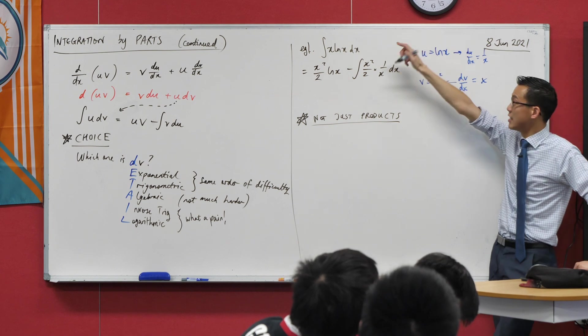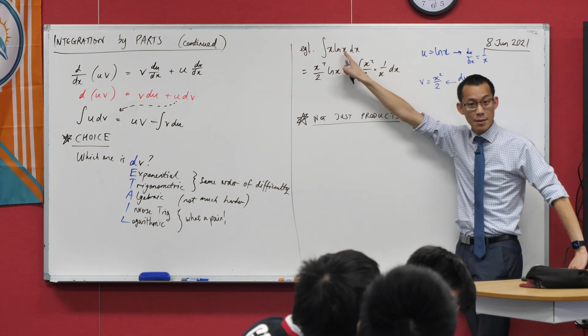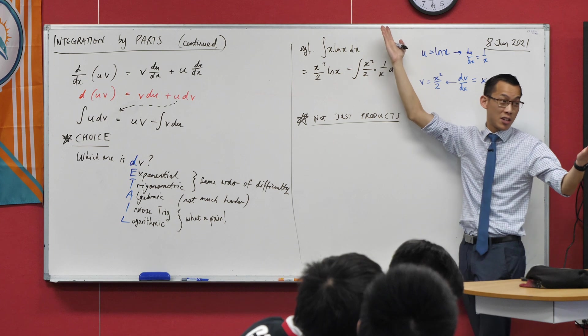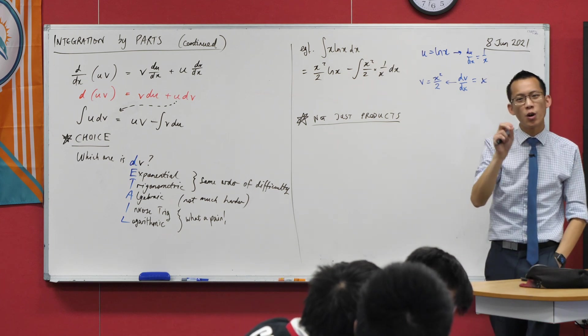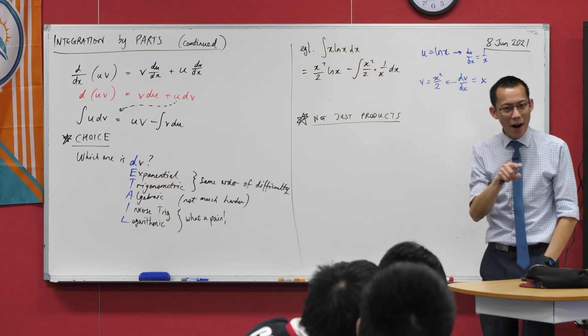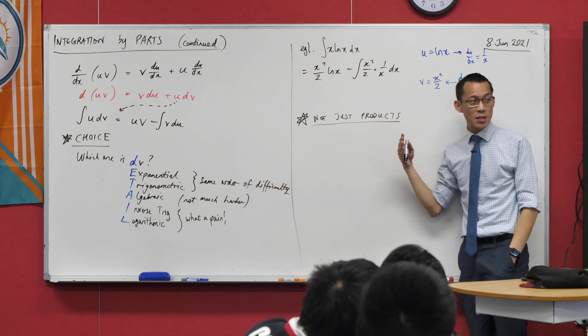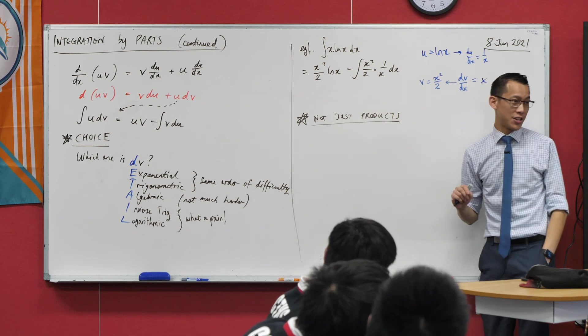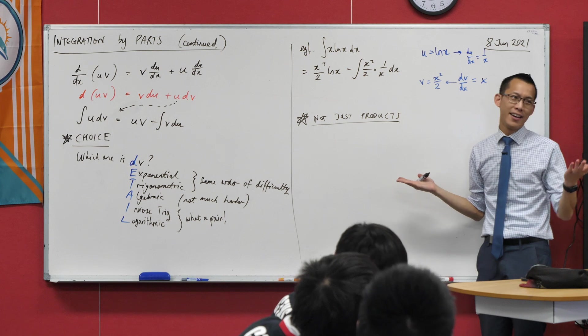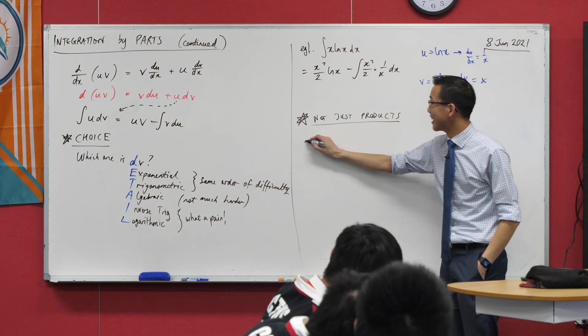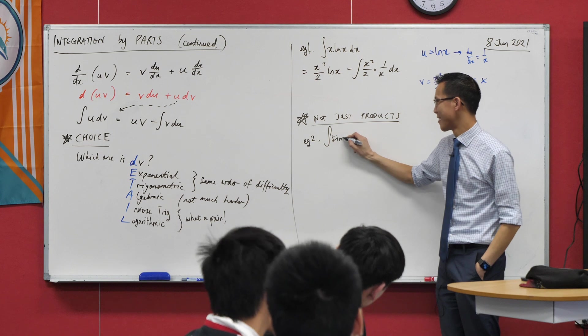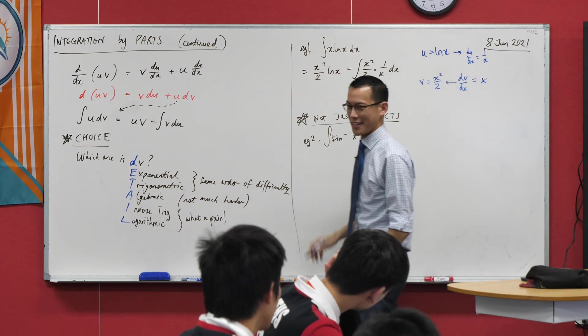This integral here, the integrand is fairly obviously something times something else. It's like, well, use integration by parts, right? Other things don't look like products, but you can write them as products and then use integration by parts. You might say, why do that? And the answer is when you have literally no other alternatives. So, feast your eyes on this.